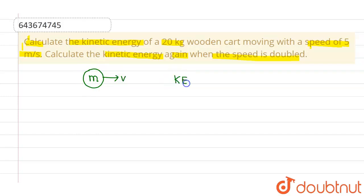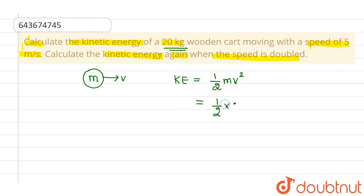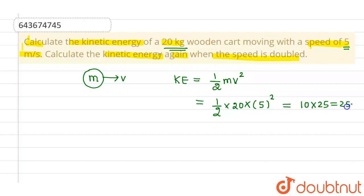We know that whenever an object of mass m is moving with a velocity v, its kinetic energy is given by half mv squared. Since the given mass is 20 kg, the kinetic energy will be half into 20 into 5 squared, which comes out to be 10 into 25, which equals 250 joules.